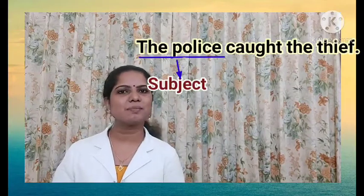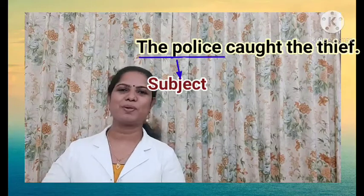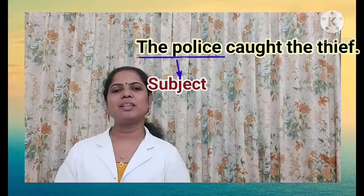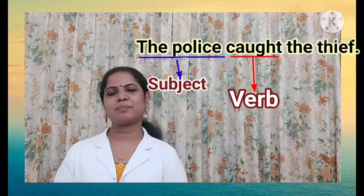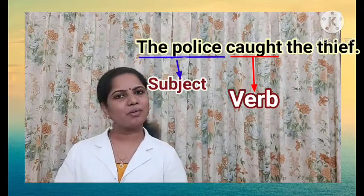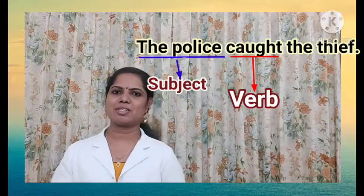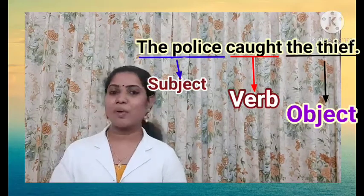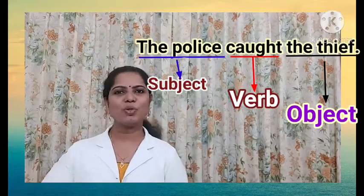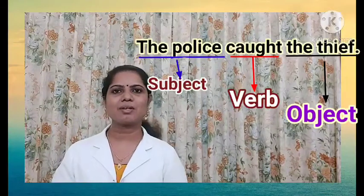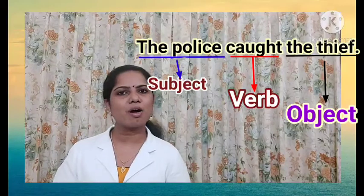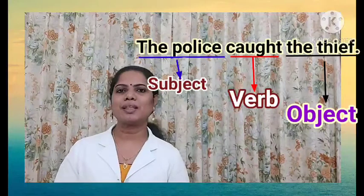Let's look at one more example: 'The police caught the thief.' Here, the subject is the police, because the sentence talks about the police. The action word — the verb — is 'caught,' past tense of catch. Who receives that action? It is the thief — the thief receives the action, so the thief is the object. You can ask 'whom' to the verb: whom did the police catch? — the thief. So if you ask 'what' or 'whom' to the verb, you get the object.